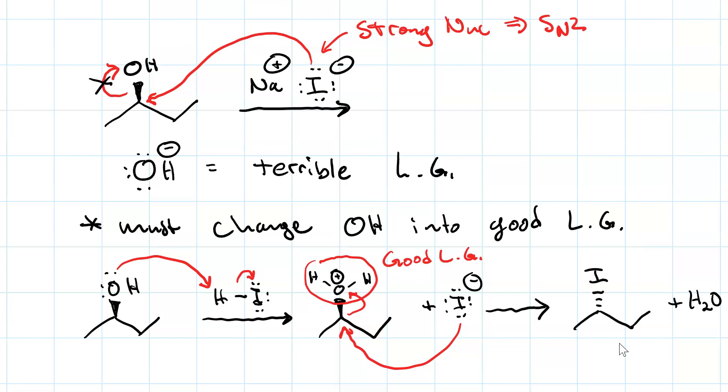Not always practical to do this in acidic conditions, however. Sometimes you need to do it in basic conditions. In that case, rather than treating your alcohol with a halo acid, you treat your alcohol with an alkylsulfonate, and then you change the OH into a sulfonate, which is a good leaving group.